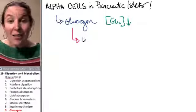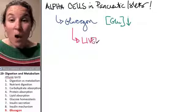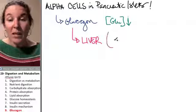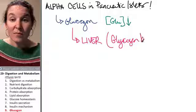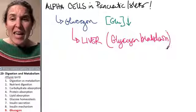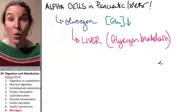Glucagon acts on the liver, you guys. Why? Because it causes the breakdown of glycogen. And it's super powerful.